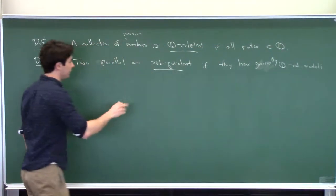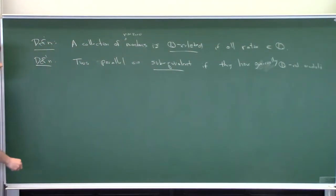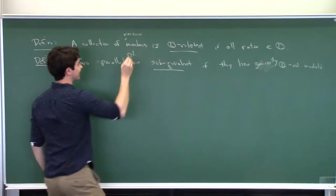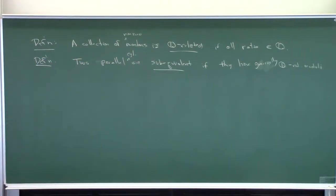So, why is this the definition that we decided to make? Well, if the theorem... sorry, is there another question? Yeah. Two parallel cylinders. Yeah, thank you. Definition's a mess. OK. Two parallel cylinders are sub-equivalent if they have generically q-related moduli. Yes. All right.